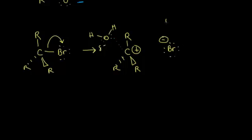Also, your polar protic solvent — water — could help to stabilize your leaving group, because the hydrogen is partially positive. So you get attraction between the partially positive hydrogen, or proton, and the negatively charged leaving group. So polar protic solvents solvate both cations and anions. Since polar protic solvents help to stabilize your carbocation, that favors an SN1 mechanism.